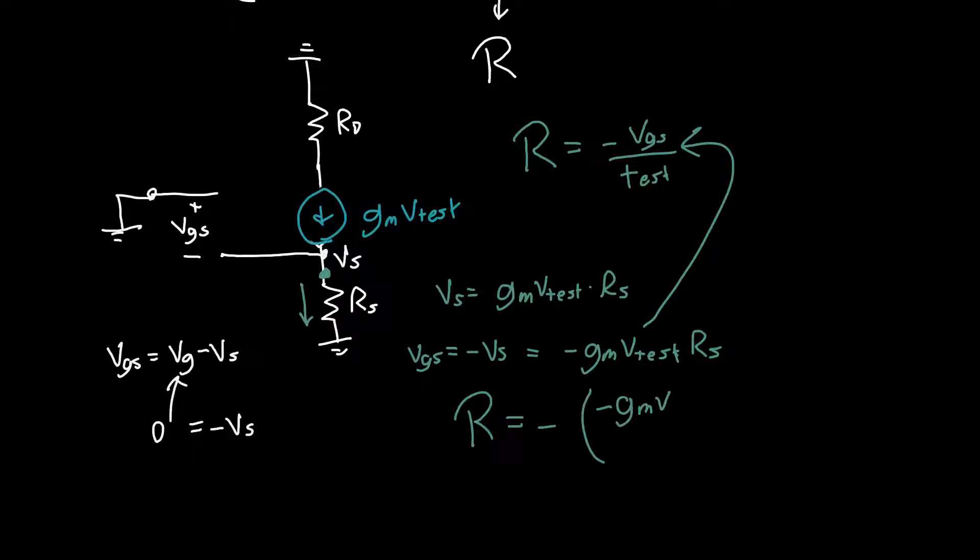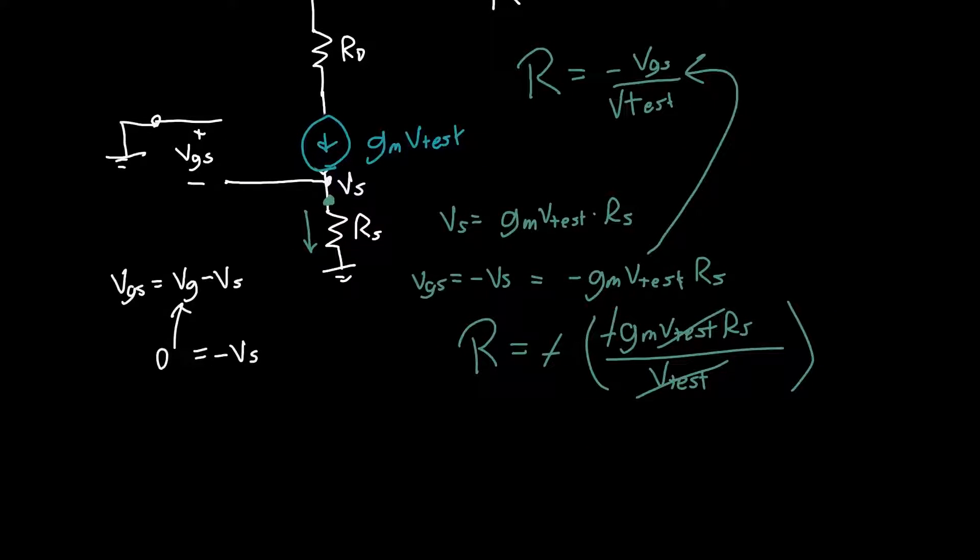The V test cancel, the negatives cancel. You see why we define this as negative VGS over V test. The return ratio is just GM RS, and we're done. That is the return ratio when you neglect RO for this common drain amplifier.